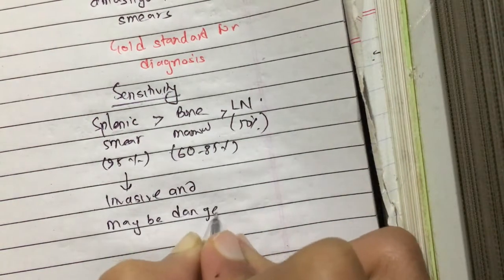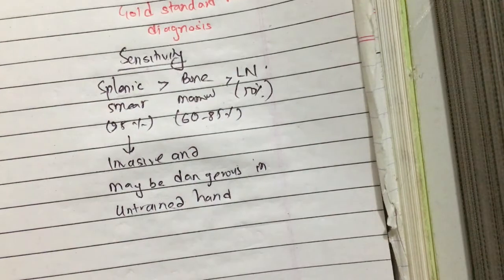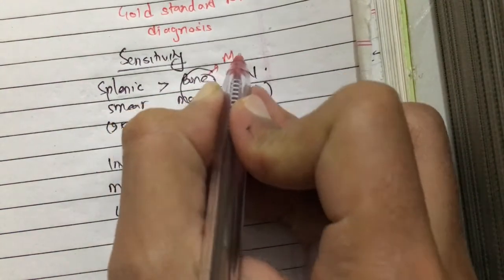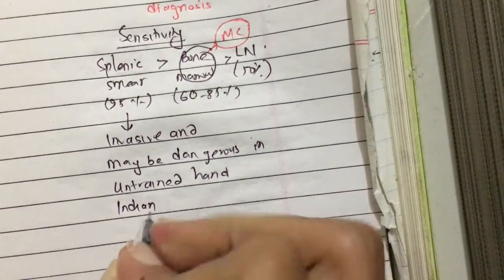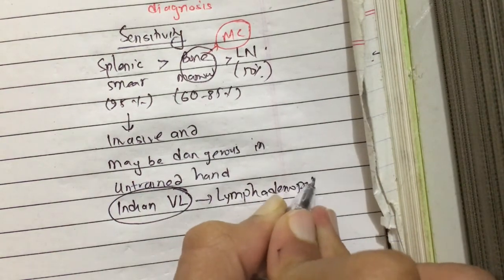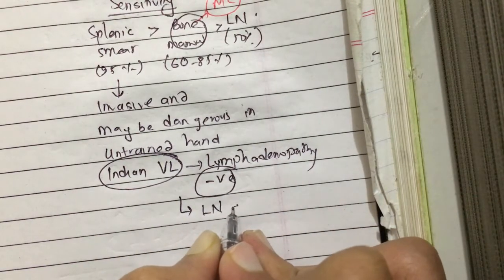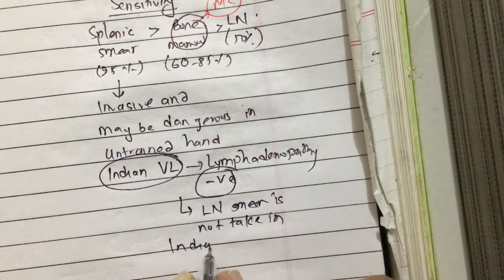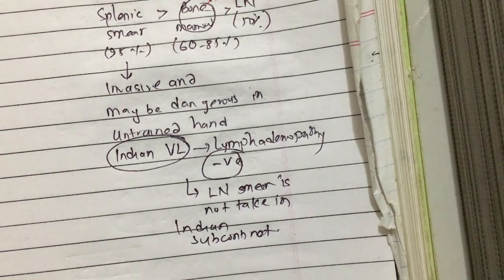So the most common tissue smear taken is bone marrow. In the case of Indian leishmaniasis, lymphadenopathy is absent, so lymph node smear is not taken in the Indian subcontinent.